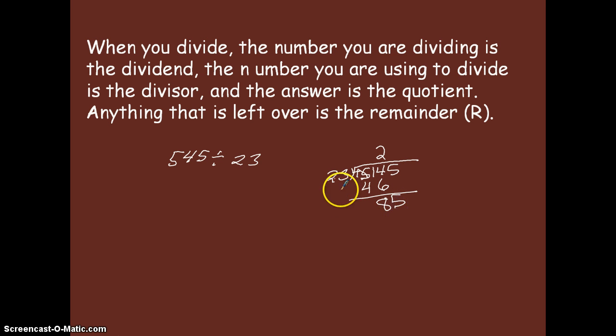Now how many times will 23 go into 85? 4 would be too many because this is very close to 25. I'm thinking 4 would be very close to 100. 3 would be more like it because I know it's going to be a little bit less than 75, but I know 4 would just be too many. So 3 times 23, that's going to give me 69.